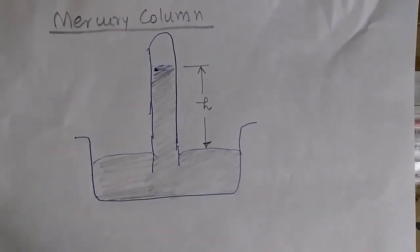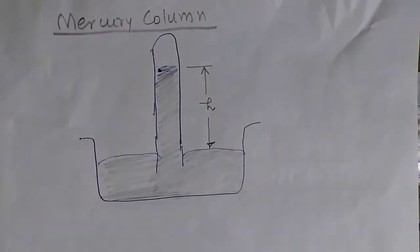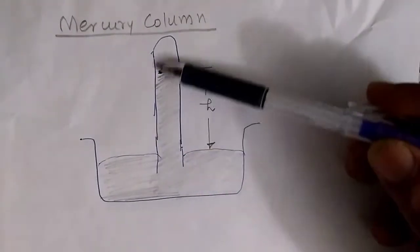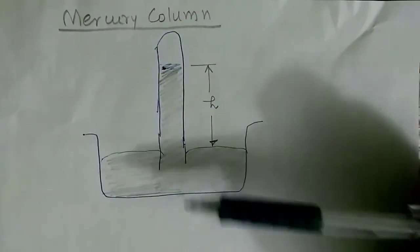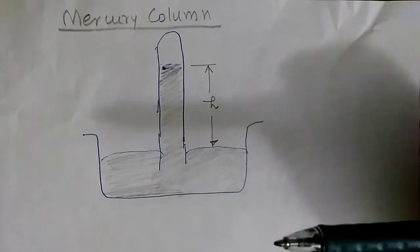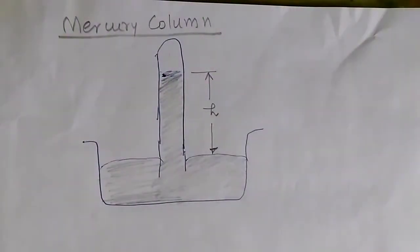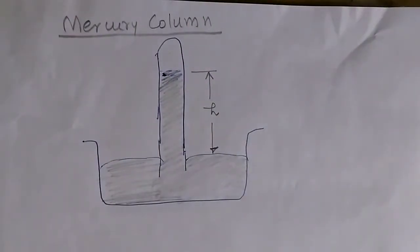We are going to understand about a mercury column, which is a kind of barometer used to measure the atmospheric pressure. We will derive the formula of the pressure and principle of its working.